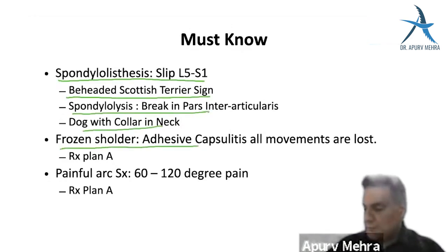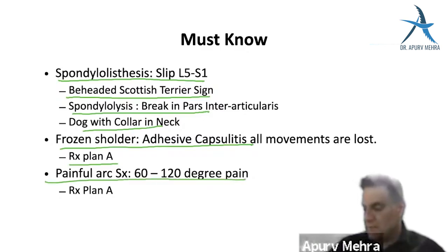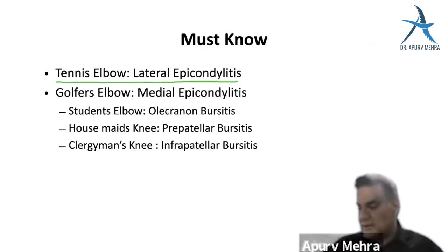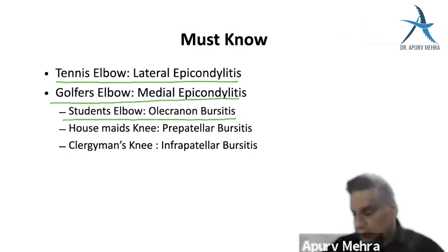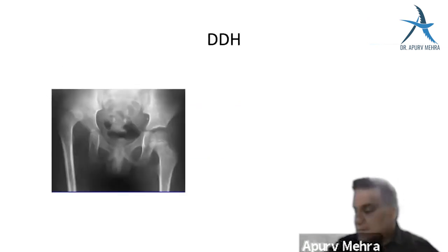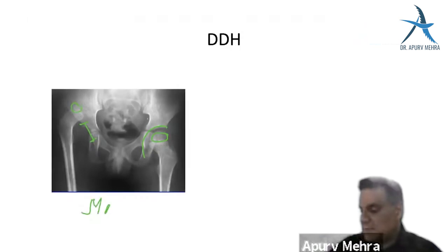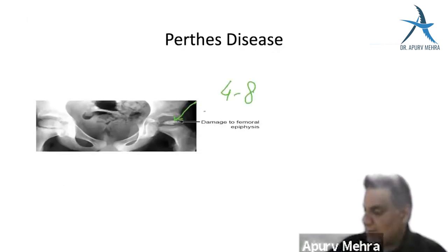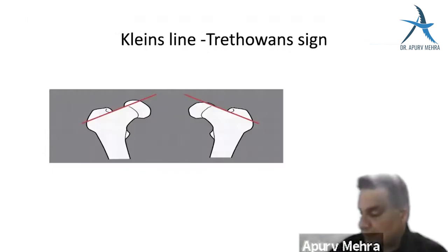Pediatric orthopedics: a good acetabulum and epiphysis should be well inside the socket. DDH: shallow acetabulum, small epiphysis — investigation of choice is MRI; treatment with Pavlik harness. Perthes disease: avascular necrosis of the femoral epiphysis at age 4–8 — limitation of abduction and rotation. SUFE (slipped upper femoral epiphysis): the epiphysis does not move — the metaphysis moves forward in relation to the epiphysis, seen at L5-S1.